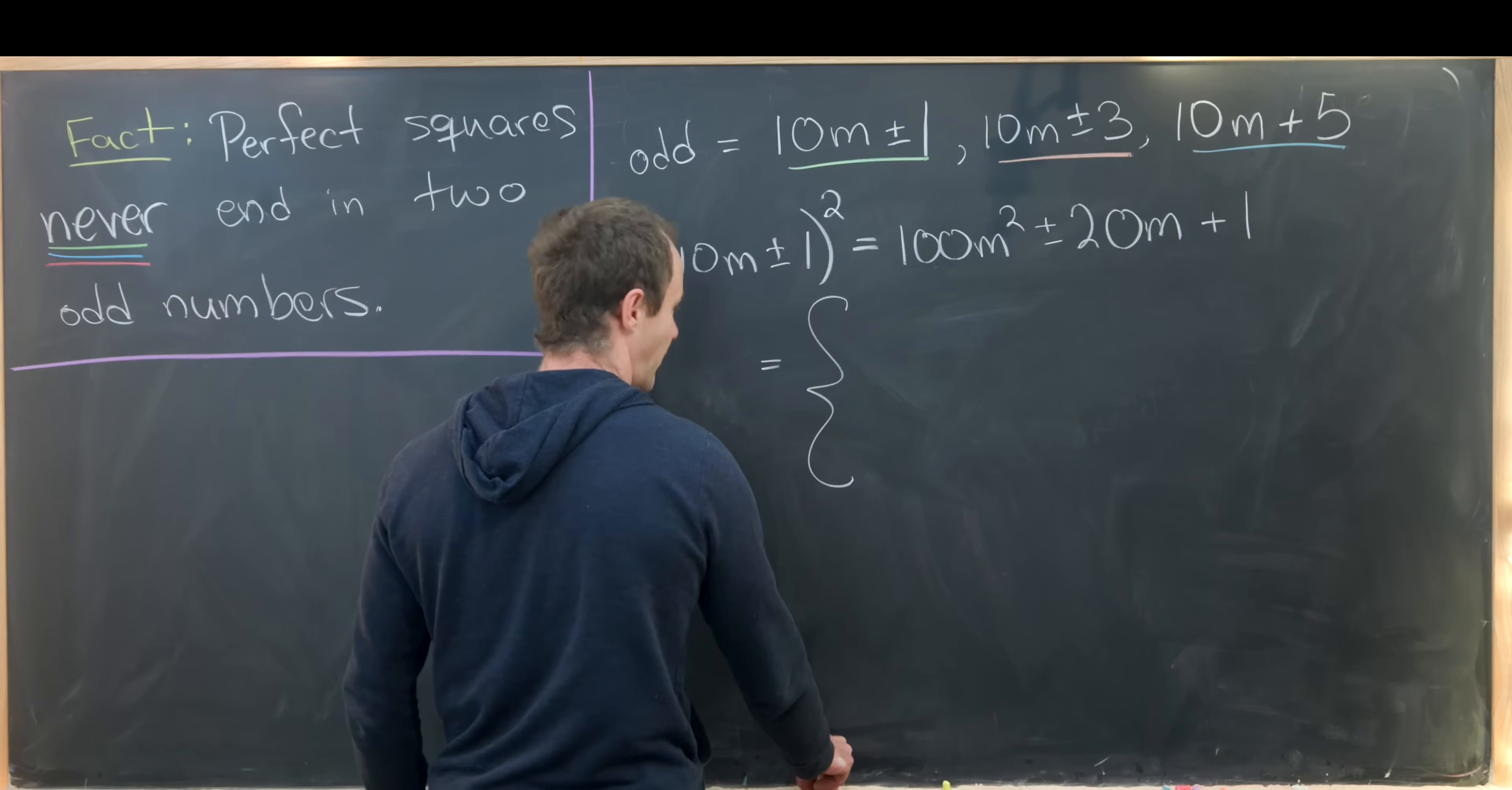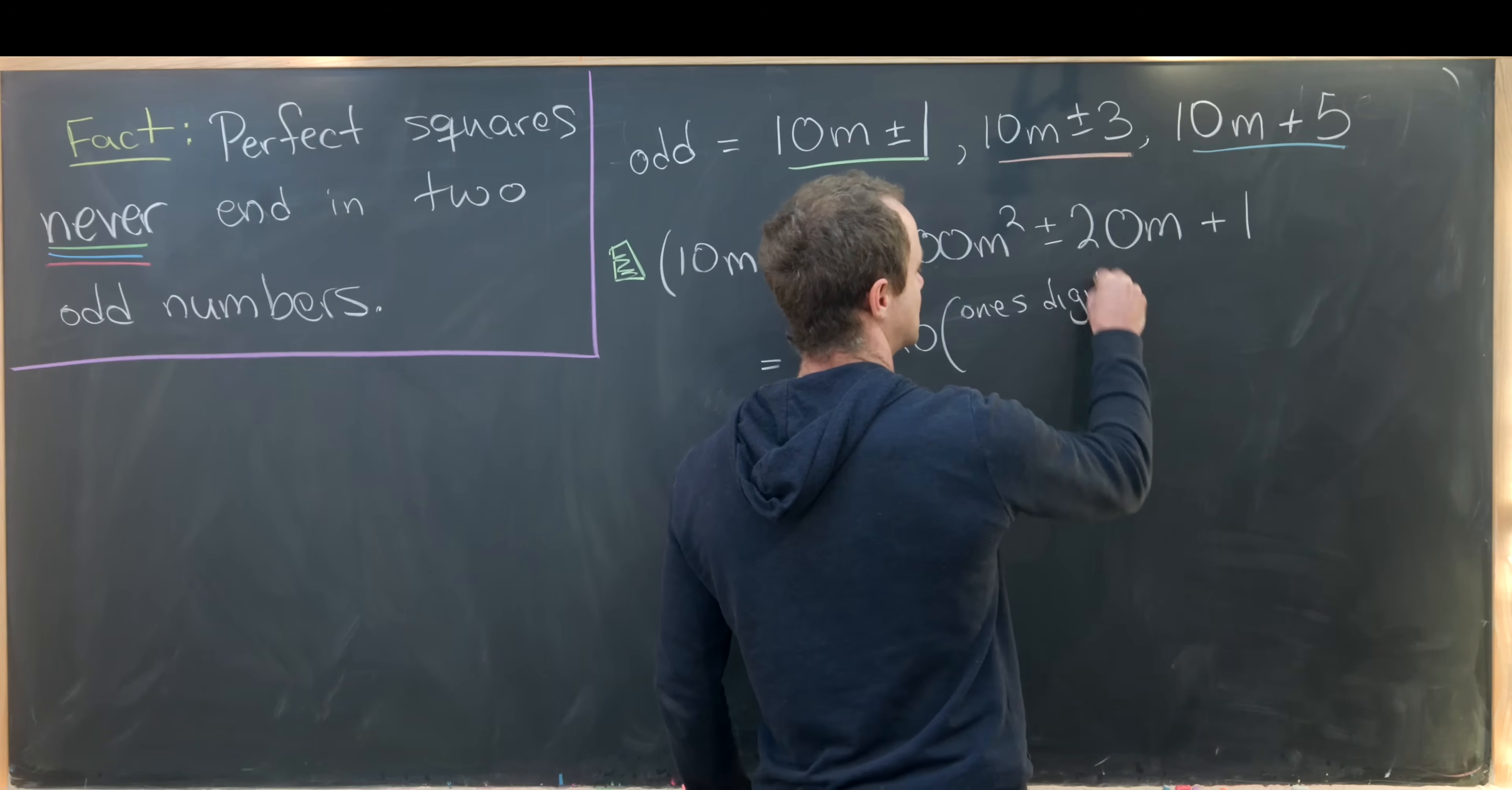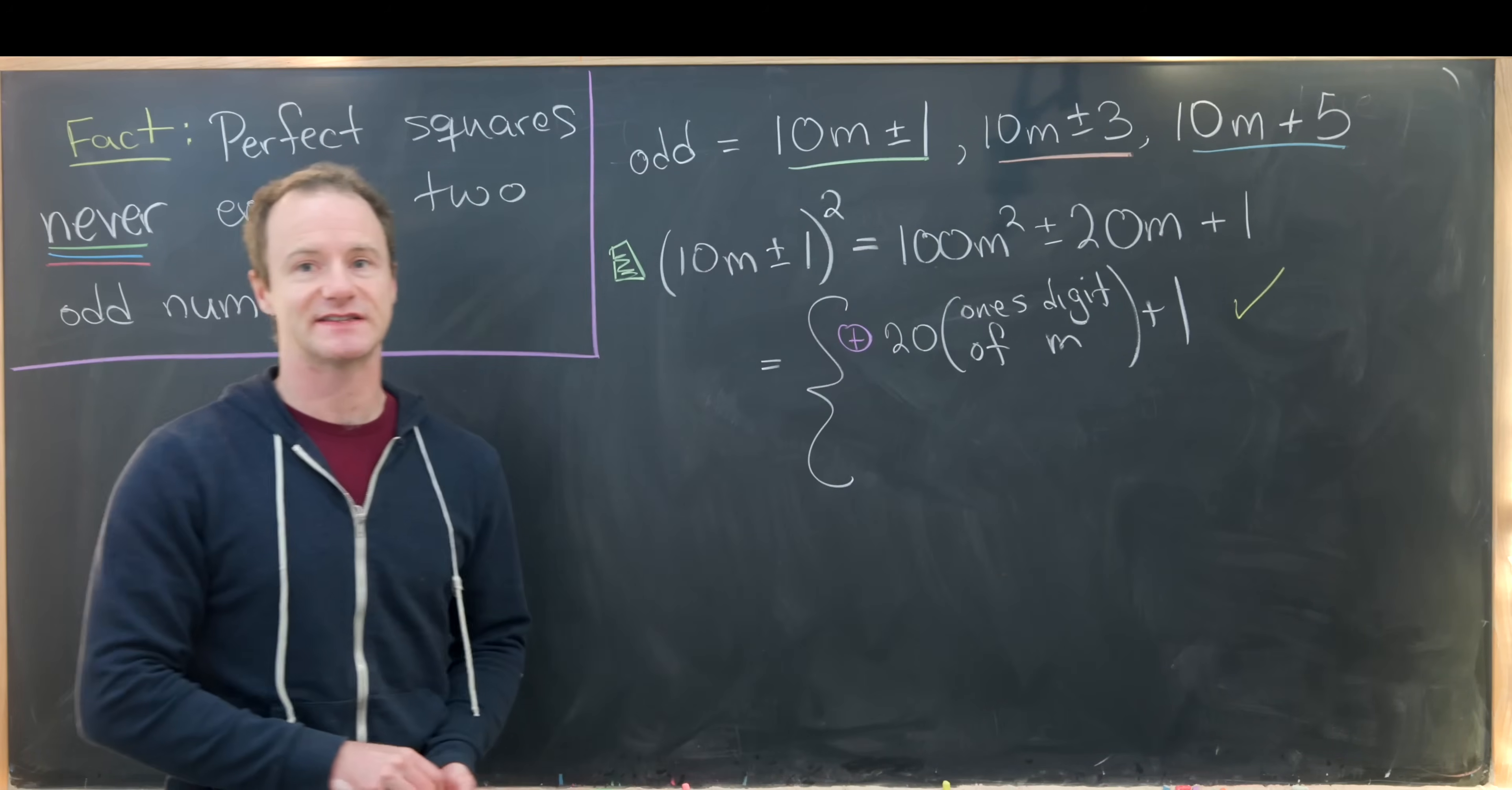So let's start with the plus. So if we have a plus here, then the last two digits will only be governed by these two terms. This 100m squared won't contribute anything to the last two digits. And those last two digits will be exactly 20 times the one's digit of m plus one. But now 20 times the one's digit of m will definitely have an even number in the tens digit, which means this object ends in an even number and then in an odd number. So we're okay in this case.